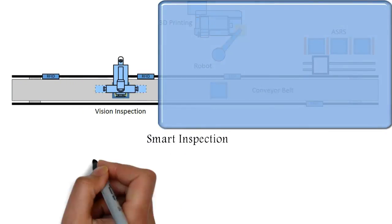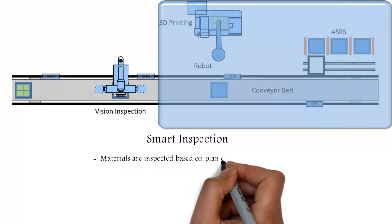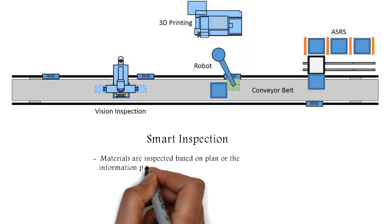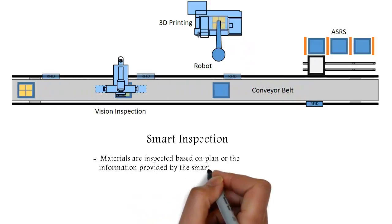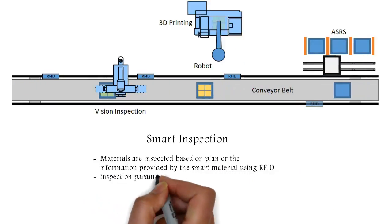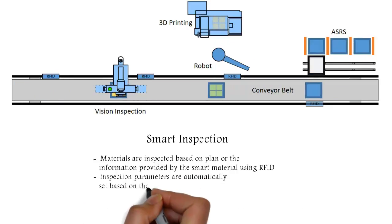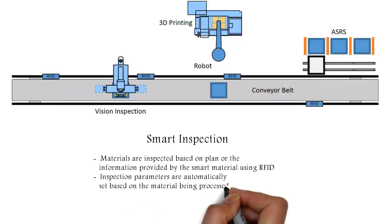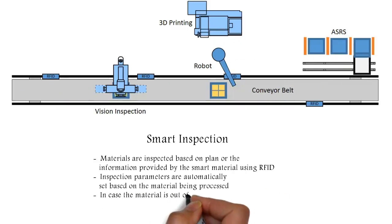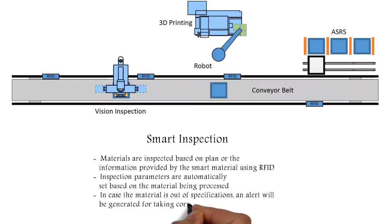Smart inspection: Materials are inspected based on plan or the information provided by the smart material using RFID. Inspection parameters are automatically set based on the material being inspected. In case the material is out of specifications, an alert will be generated for taking corrective and preventive action.